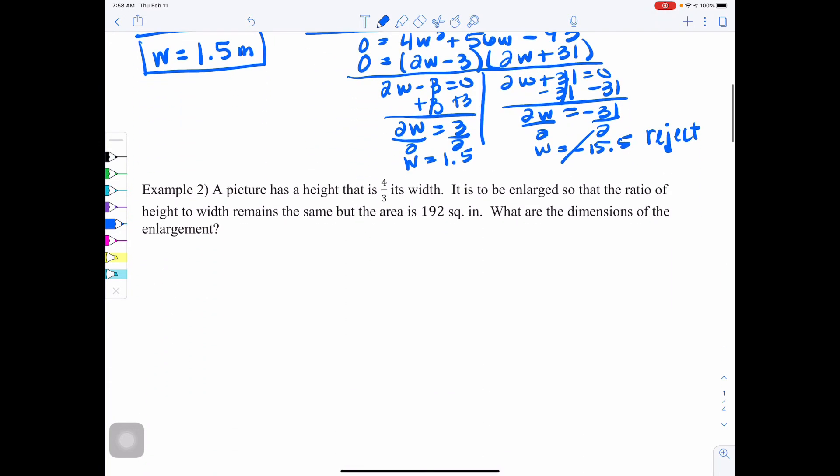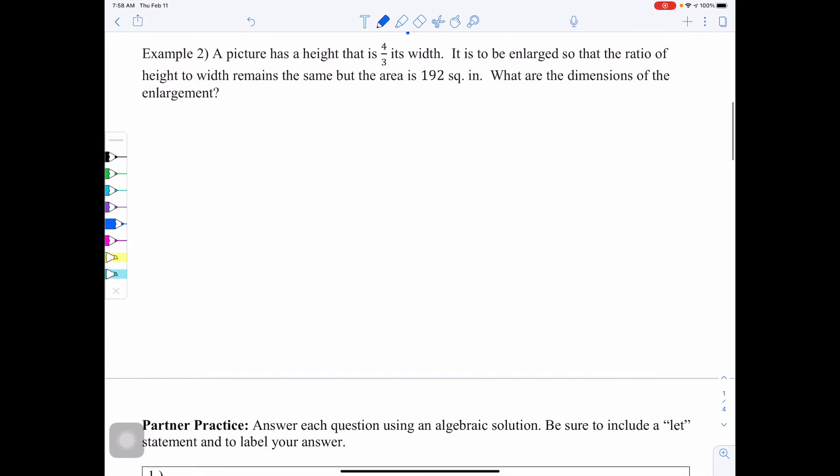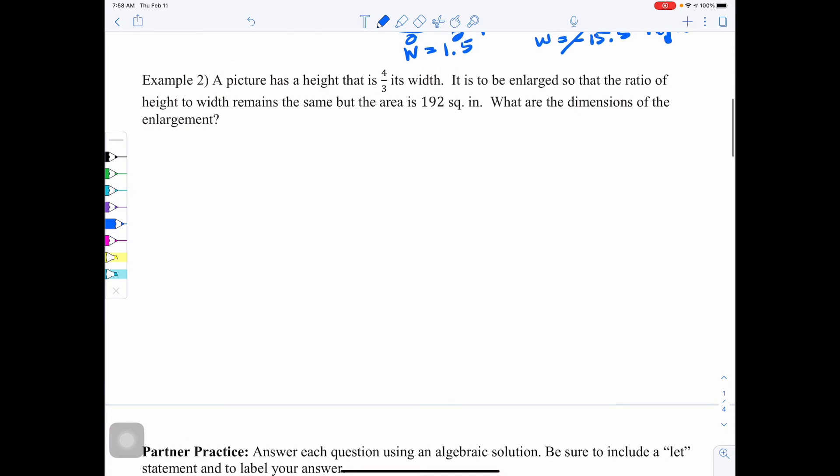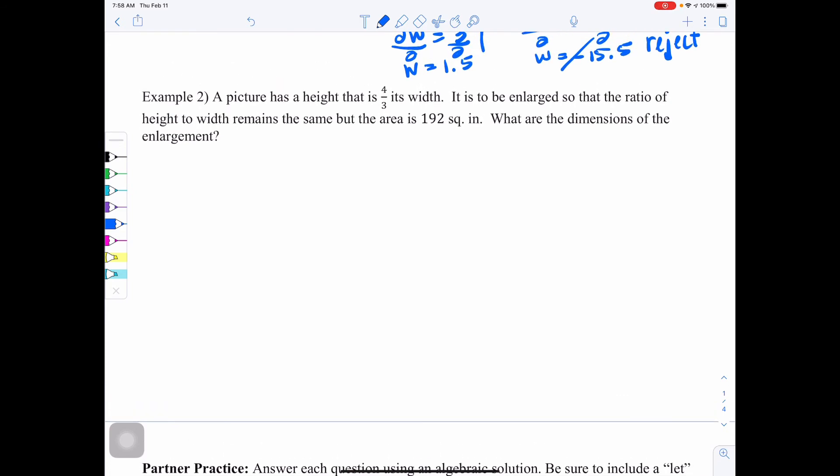Now let's go on to example 2. We have a picture that has a height that is 4 thirds its width. It is to be enlarged so that the ratio of the height to the width remains the same, but the area is 192 square inches. What are the dimensions of the enlargement? So again, my first tip to you would be to draw a picture. So a picture has a height that's 4 thirds its width. So we're going to draw the picture.